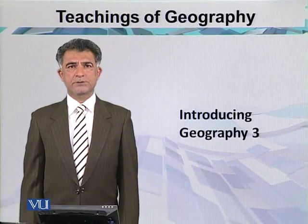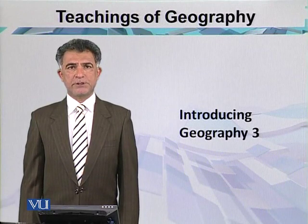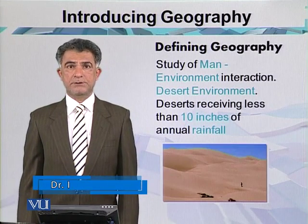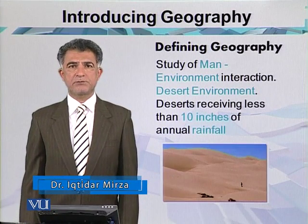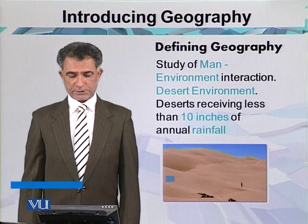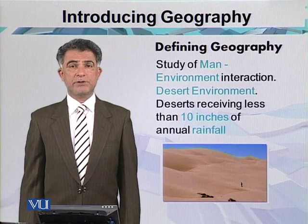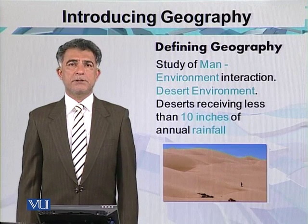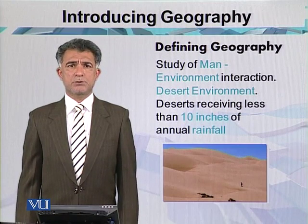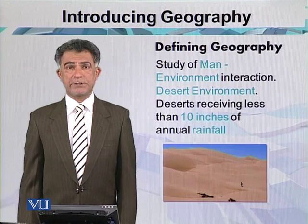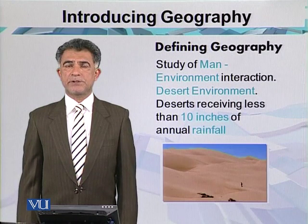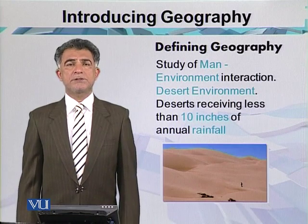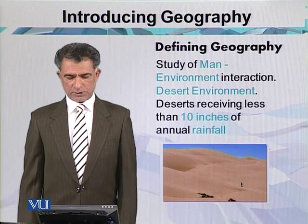One of the most important activities of geography is man-environment interaction. Here we consider things related to man and his control environment. The best example is the desert environment, where the climate is too harsh for living. It has less than 10 inches of annual rainfall, water is not available for drinking, agriculture is very scanty, and vegetal cover is absent. This type of condition belongs to the desert environment.